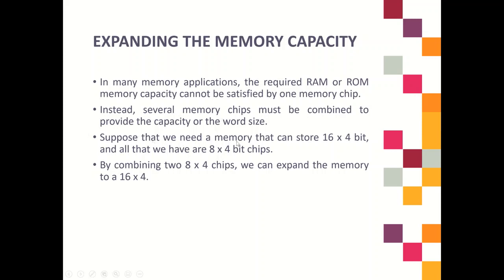Suppose we need a memory that can store 16×4 bits, but what we have is only 8×4 bit chips. The capacity we need is 64 bits, which is 16×4. The capacity we have is only 32 bits, because the memory we have is 8×4. So to fulfill the requirement of 64 bits, we can combine two 8×4 bit chips to expand the memory to 16×4.